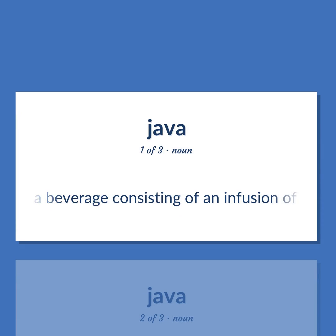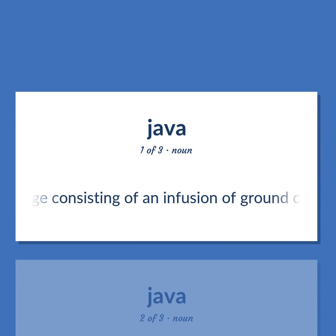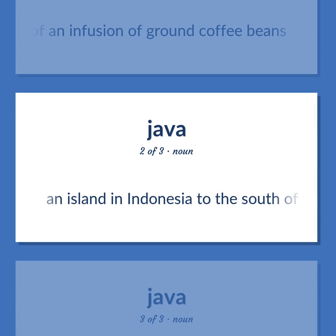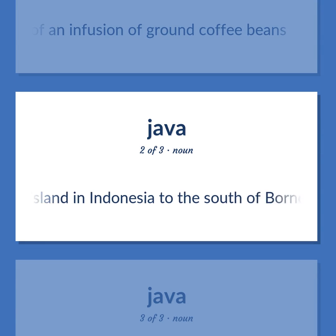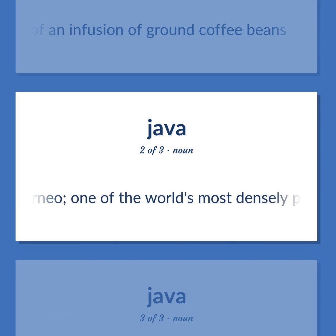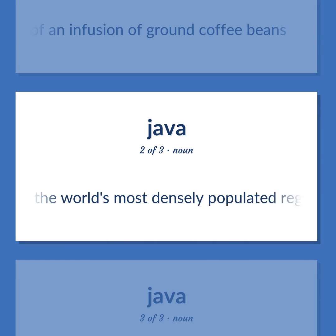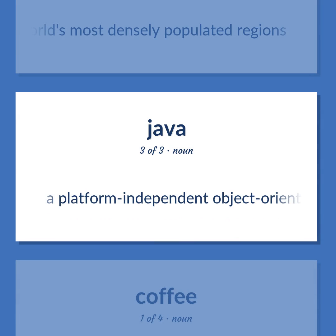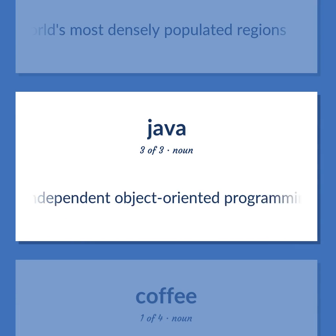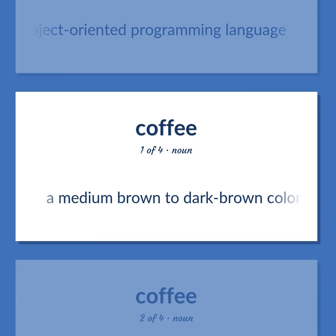Coffee: a beverage consisting of an infusion of ground coffee beans. Java: an island in Indonesia to the south of Borneo, one of the world's most densely populated regions. Also: a medium brown to dark brown color.